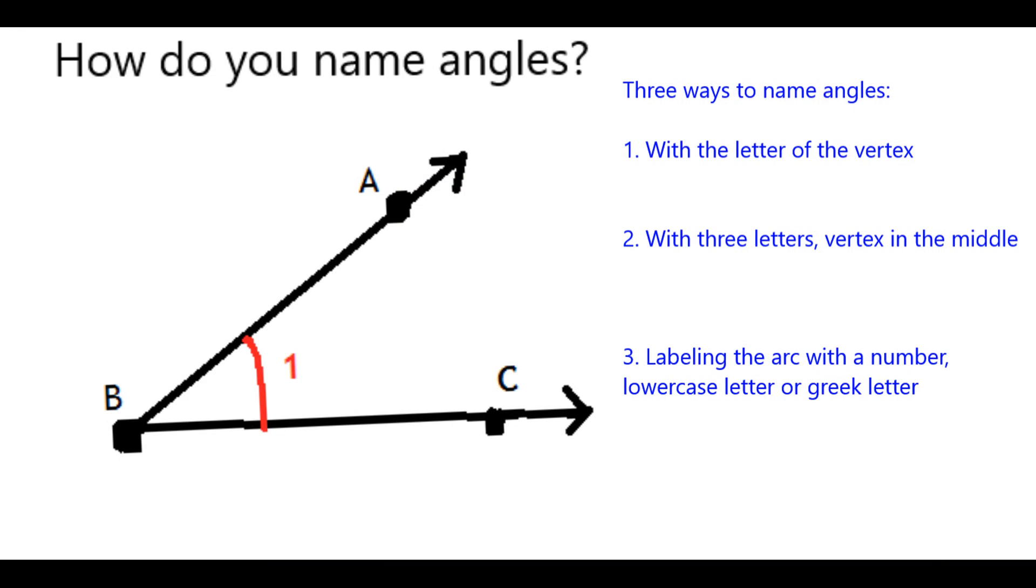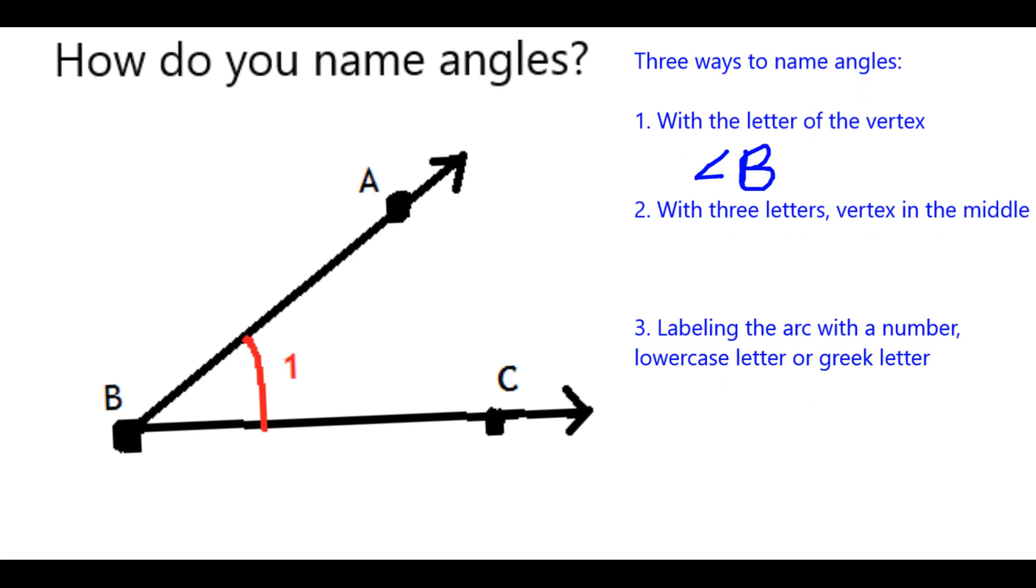In geometry, there are three basic ways that you can name, or specify, an angle. First, you might refer to it by the letter that represents its vertex. In this case, it would be capital letter B, and that's unambiguous because that's the only thing that the capital letter B could represent, the only angle it could represent.